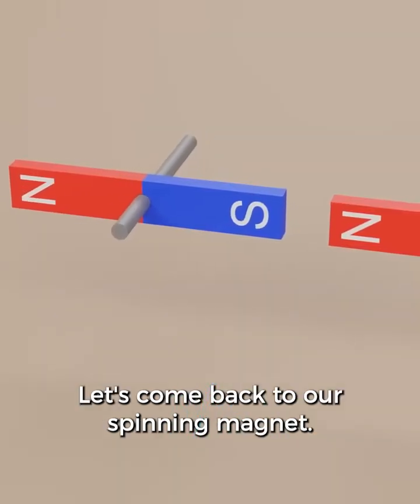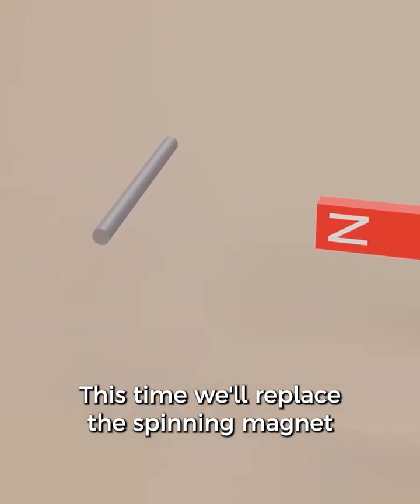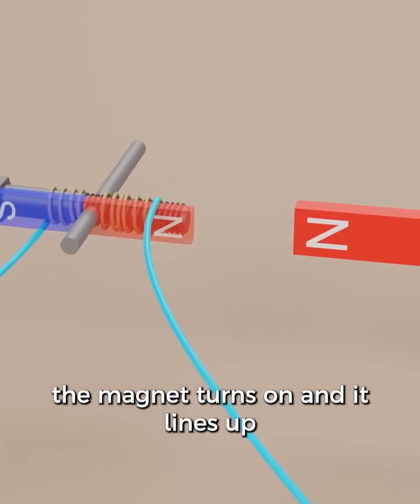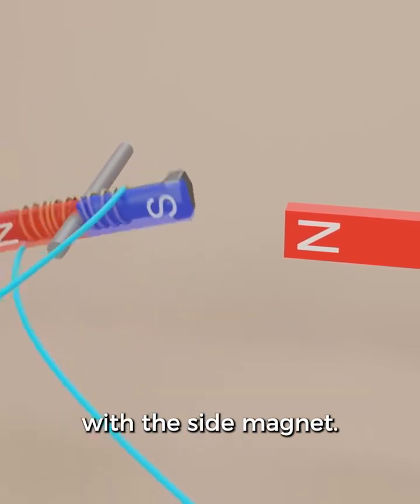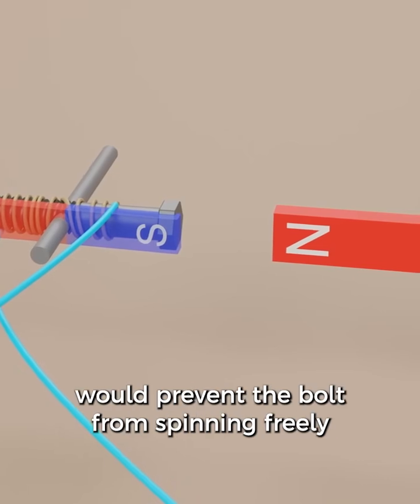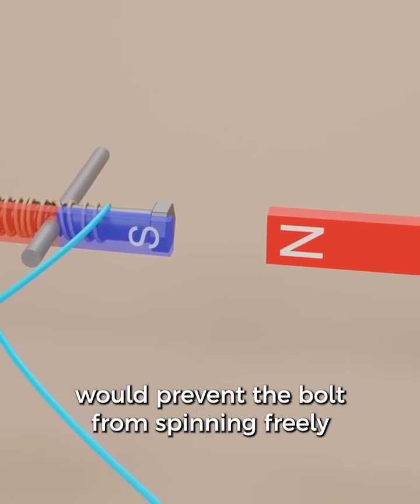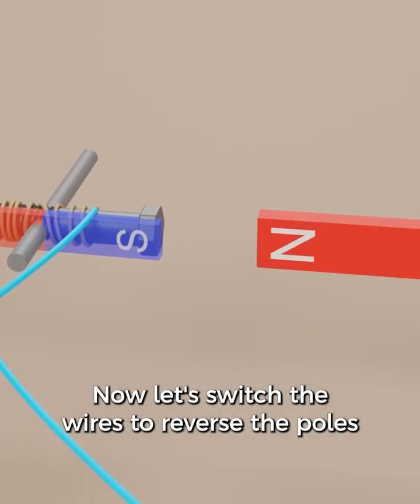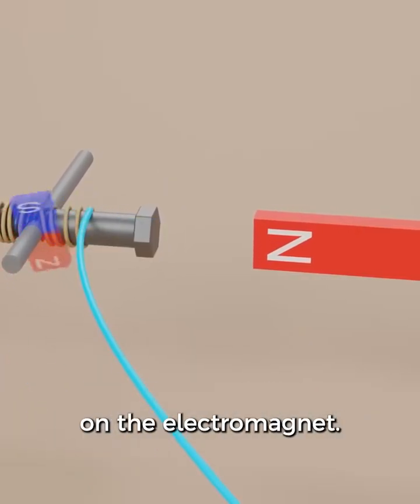Let's come back to our spinning magnet. This time we'll replace the spinning magnet with our electromagnet. As soon as we connect the wires, the magnet turns on and it lines up with the side magnet. Now in reality, connecting these wires would prevent the bolt from spinning freely, but what's important here is the concept of the spinning electromagnet. Now let's switch the wires to reverse the poles on the electromagnet.